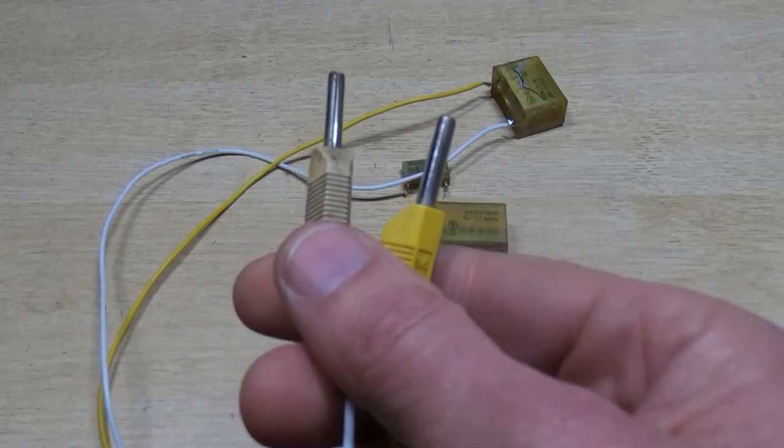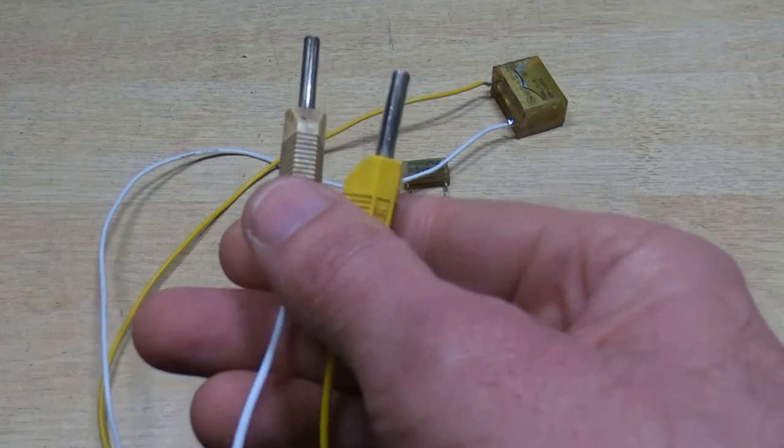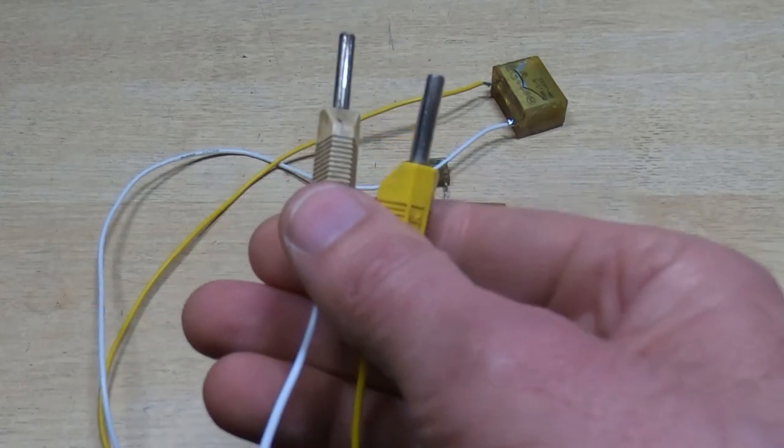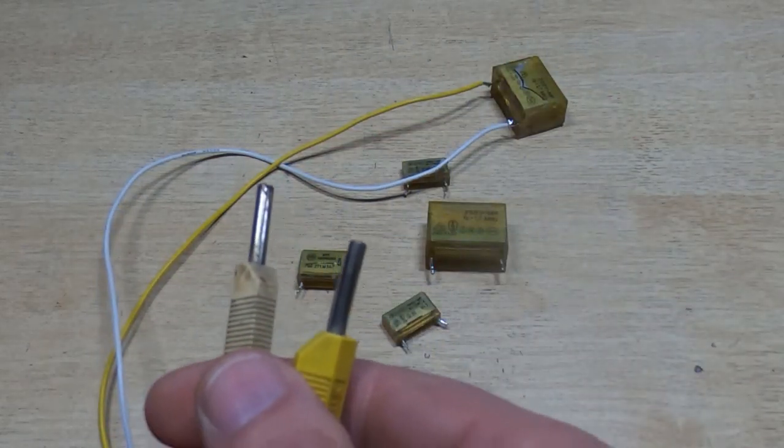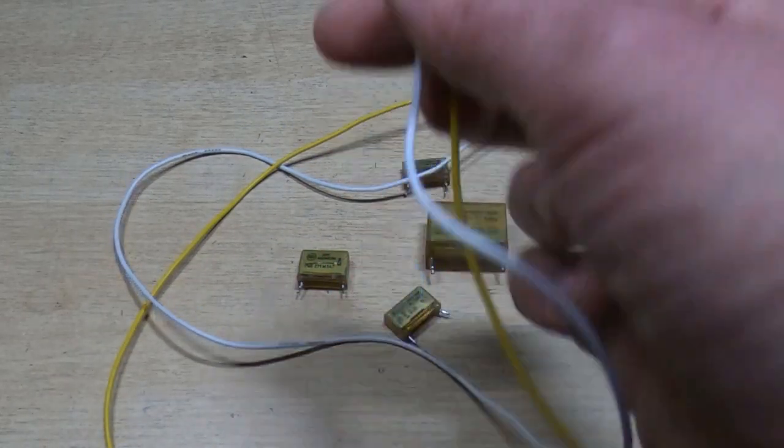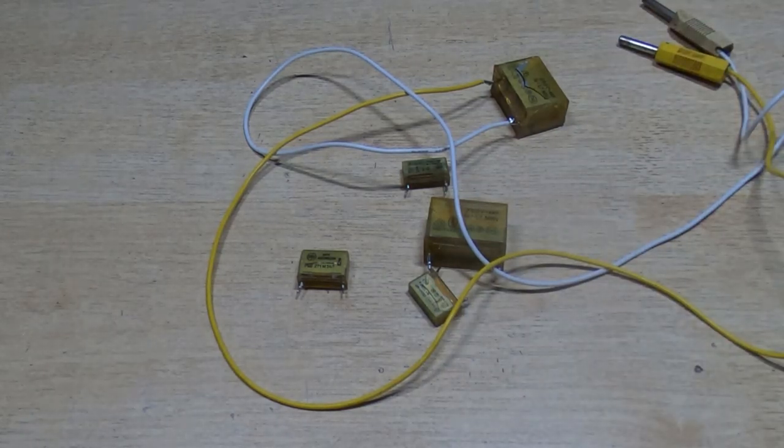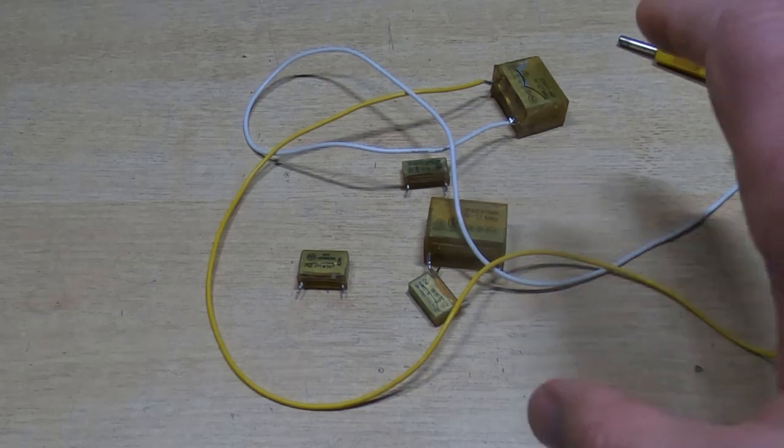I'm going to connect this across my bench transformer. I'm going to set it to 240 volts, which is the nominal mains supply voltage here, and we'll sit and watch it for a few minutes and see what happens. I have put a one-amp fuse in the bench transformer just to cut down any carnage if something does happen.